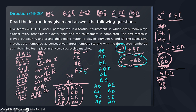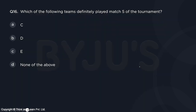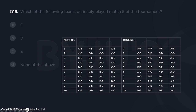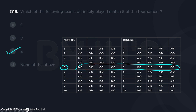You might say this is quite lengthy, but this is the only information in the question. If there are five questions in LRDI based on this, it's worth doing. This was the logical part. Had you understood it, you could have done the question in six or seven minutes by making all eight cases. Moving to the questions: which teams definitely played match five? Match five is definitely played by E. So the answer is option C, which is E.